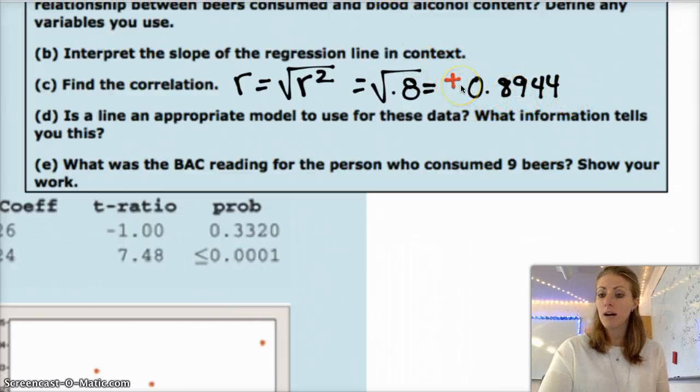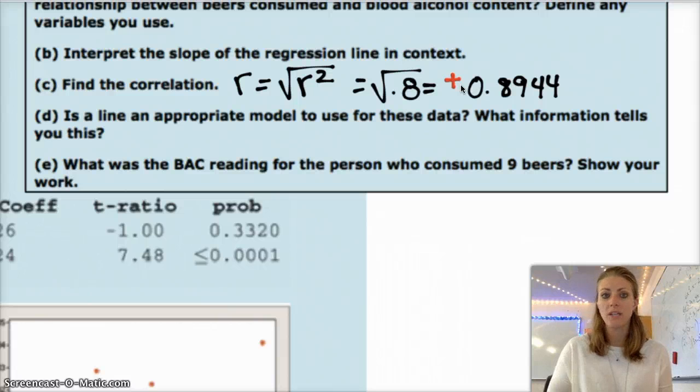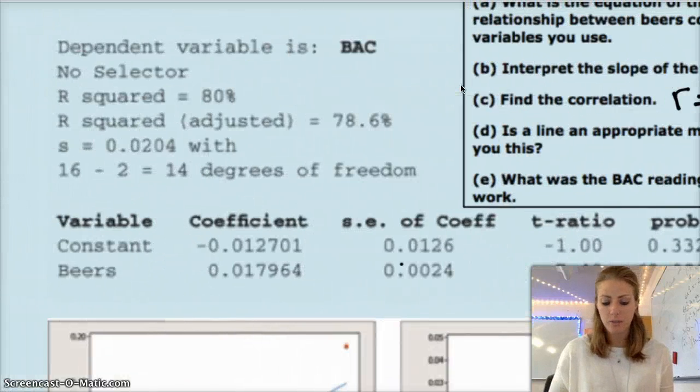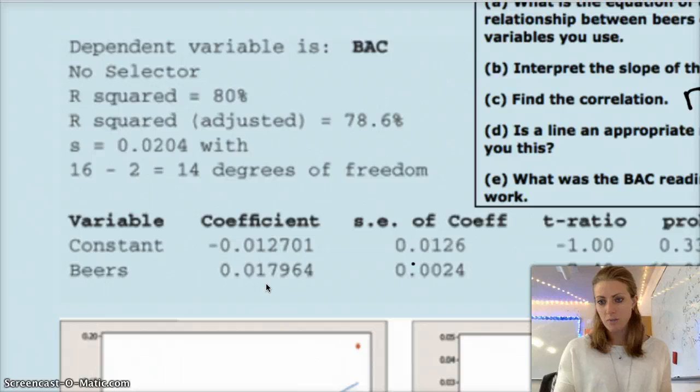And I chose that it should be positive because the more beers you drink, the higher your BAC gets. So it should be a positive relationship. Another way to tell is what is the slope? Is the slope positive or negative? It should be the same. So in this case, right, our slope is positive 0.01796. So r should be the same as that.